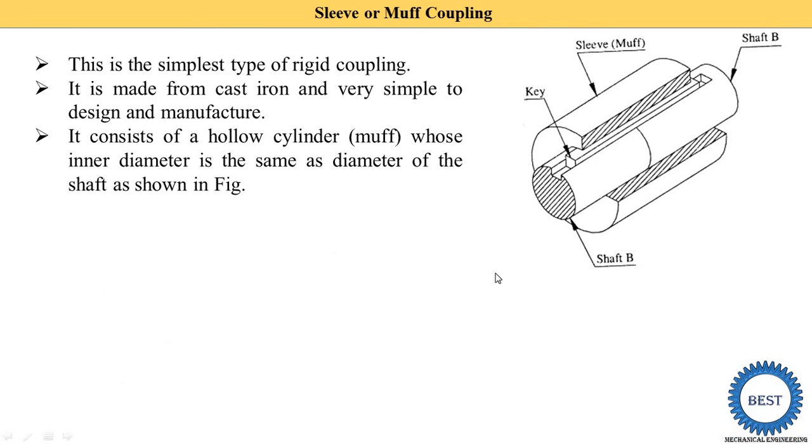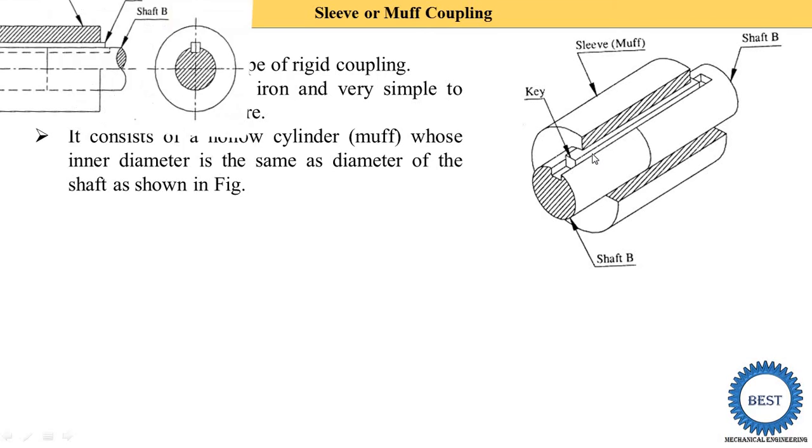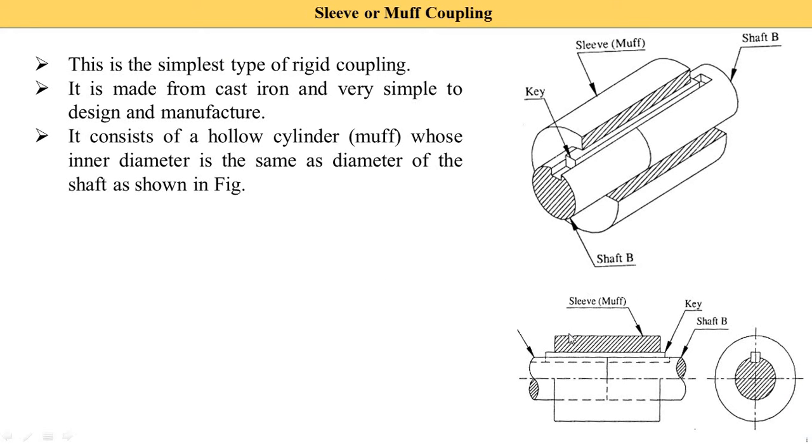Here you see this diagram. This is shaft A - by mistake here B is written - this is shaft A up to this point, and this is shaft B. The outer part is called a sleeve or muff. The inner diameter of the sleeve is the same as the diameter of the shaft. For example, if the shaft diameter is 50mm, then the inner diameter of the sleeve or muff is 50mm.